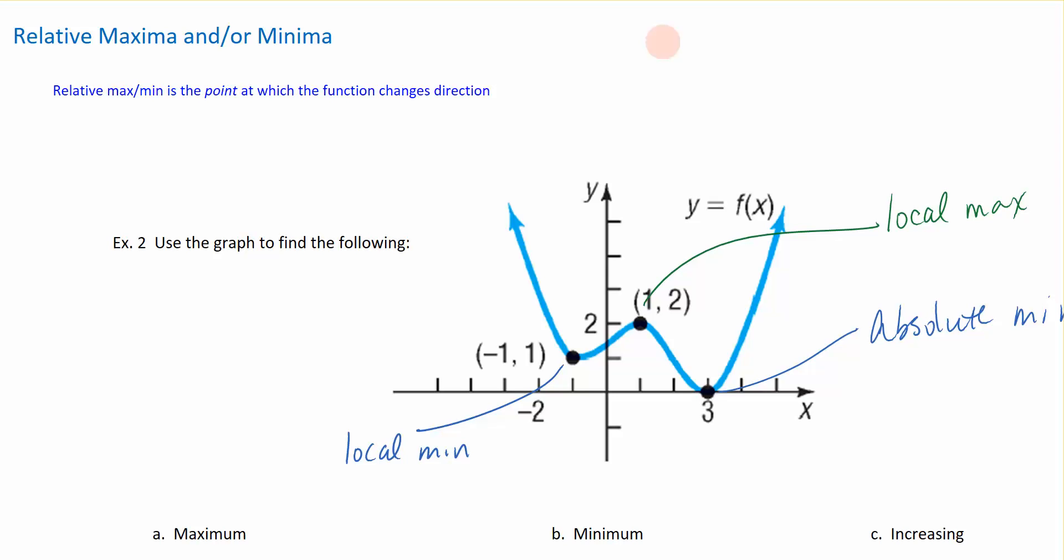Another characteristic we want to look at when discussing the graphs of our functions are the relative max and min, the relative maxima or minima. That is by definition really just the point at which the function changes its direction.